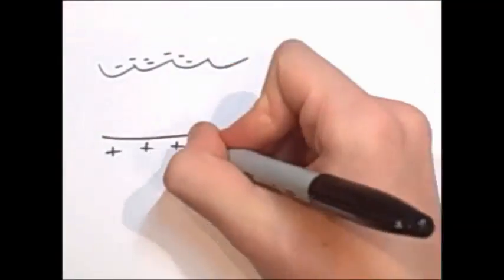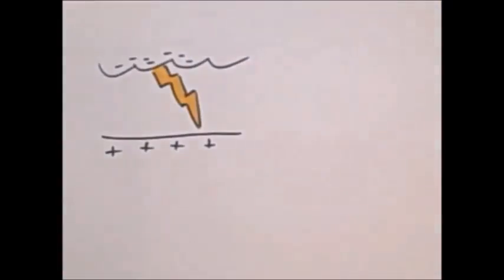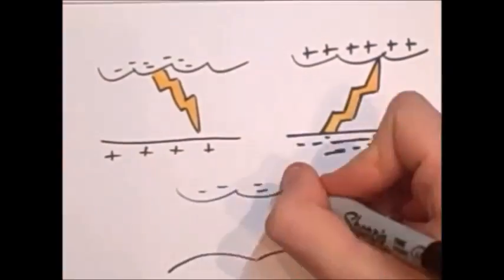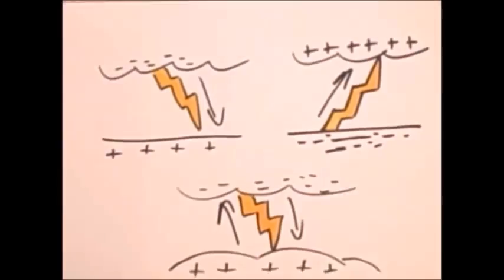For example, negative lightning is electrons moving from the clouds to the earth, from the earth to the clouds, or even clouds to other clouds, wherever their charge happens to be.